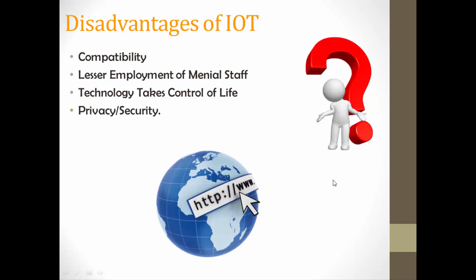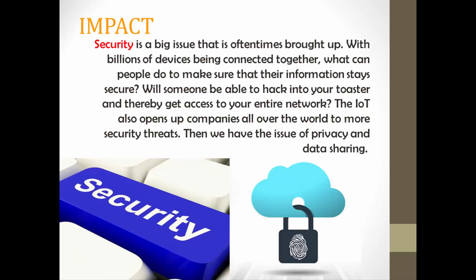Disadvantages of IoT: first is compatibility — you should choose a right model that is compatible, otherwise you'll have issues. Second is employment — physical workers get reduced. Third, technology takes control of life — everything is done by technology and human involvement is reduced. Finally, privacy and security is very important: if a hacker tries to access your data and succeeds, it is a security issue. So choose a product that offers the best security features.